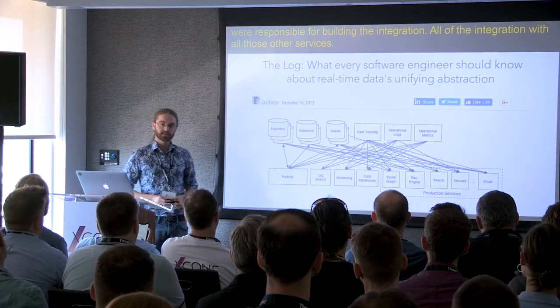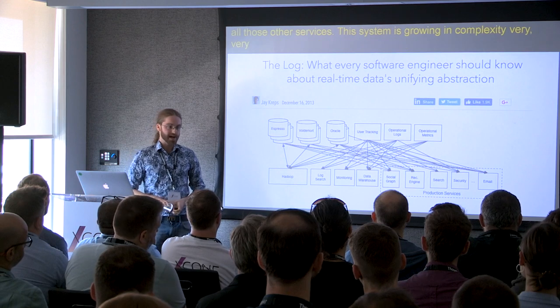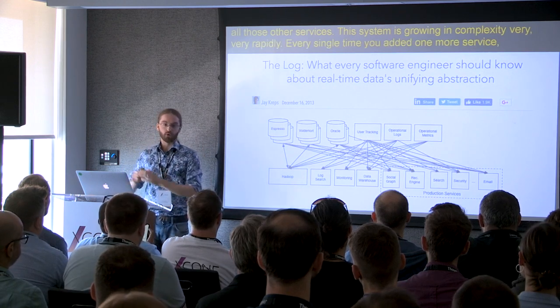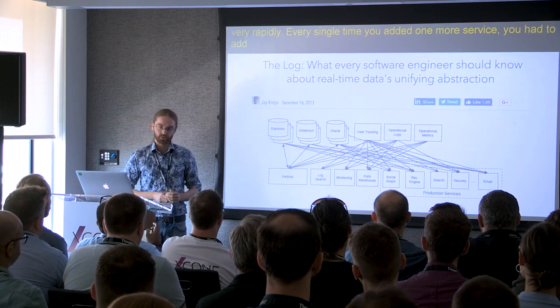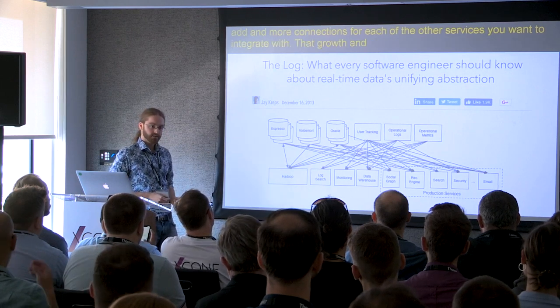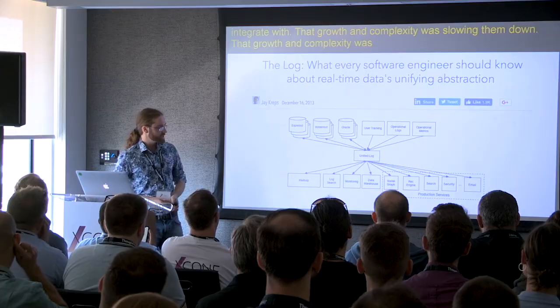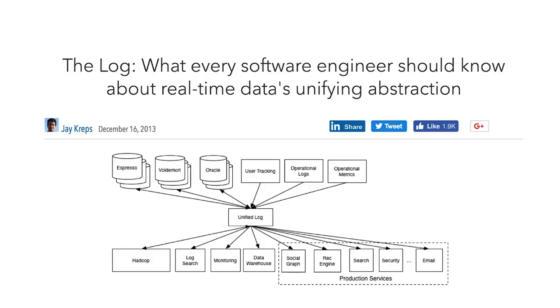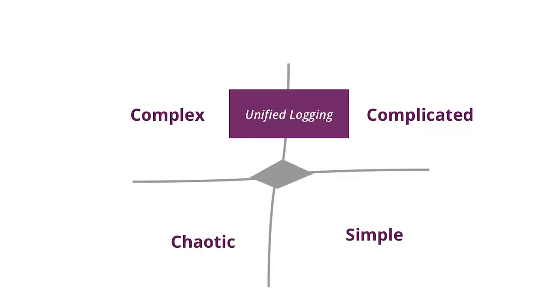This system was growing in complexity very rapidly. Every single time you added one more service, you had to add n more connections for each of those other services you wanted to integrate with. That growth in complexity was slowing them down, becoming unmanageable. So they moved to this: they moved to a single unified log. Every single service communicated through this unified log. The unified log, by the way, is Kafka. This article is about how and why Kafka was invented. Unified logging was about controlling that growth of complexity. It did not remove it, did not snap its fingers and make it go away, but it was a tool for helping them manage that growth of complexity and manage that system as a whole.